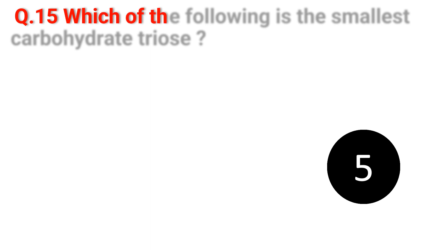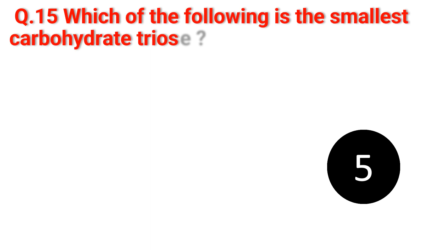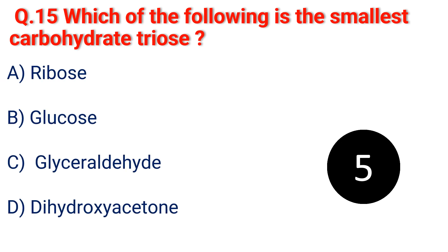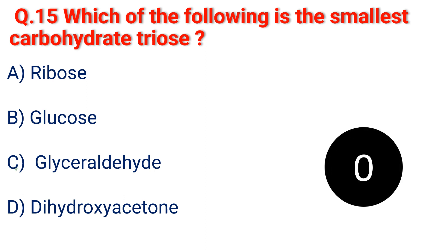Question 15. Which of the following is the smallest carbohydrate? A. Ribose. B. Glucose. C. Glyceraldehyde. D. Dihydroxyacetone. The answer is C. Glyceraldehyde.